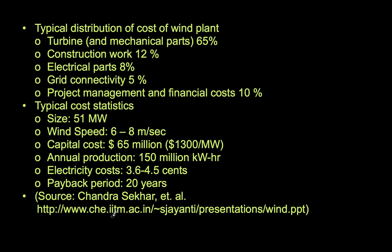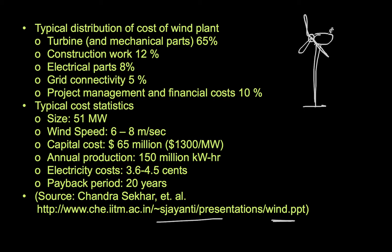Looking at the typical distribution of costs in a wind plant: the turbine itself accounts for 65% of the cost, construction is 12%, electrical parts are 8%, grid connection is 5%, and the remaining 10% covers project management, financial costs, salaries, and similar expenses. This is the general cost distribution for a wind plant.